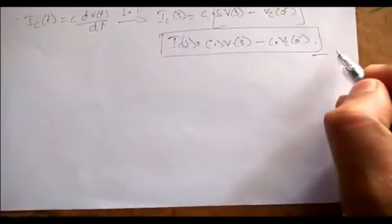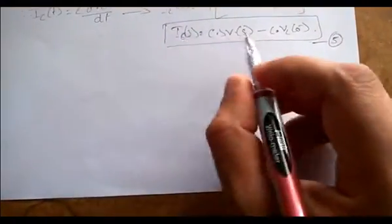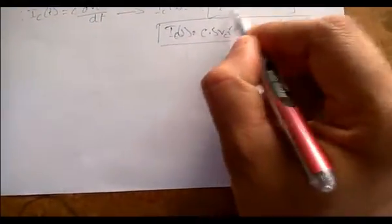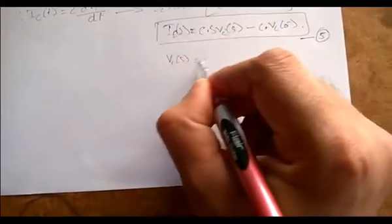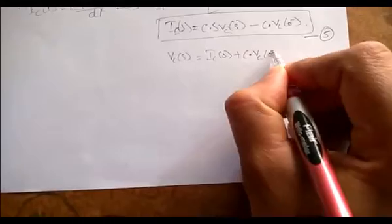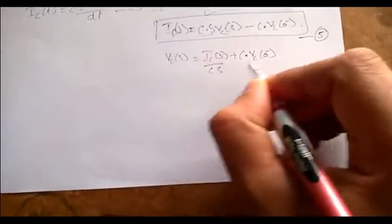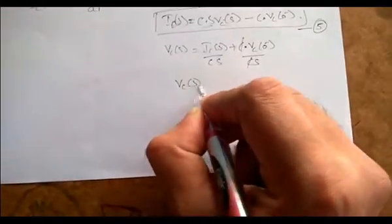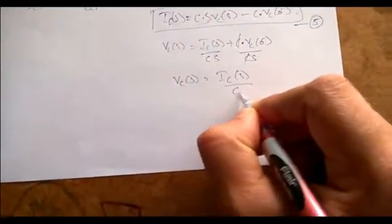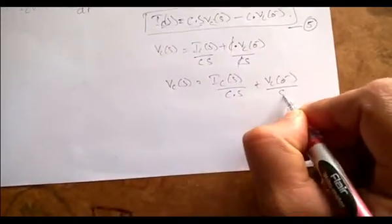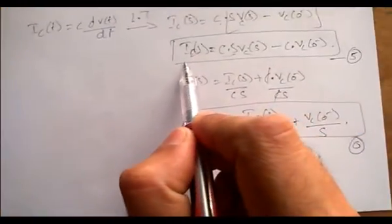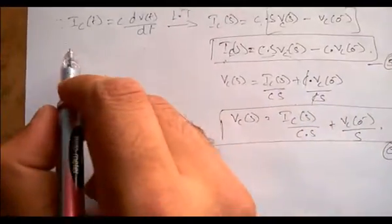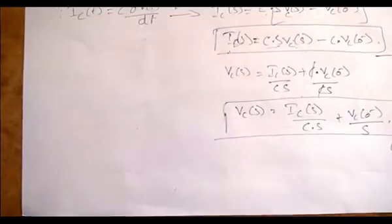From the fifth equation, we can derive the voltage VC(s). Rearranging: VC(s) = IC(s)/(Cs) + Vc(0⁻)/s. The Cs terms cancel appropriately, giving the sixth equation: VC(s) = IC(s)/(Cs) + Vc(0⁻)/s.